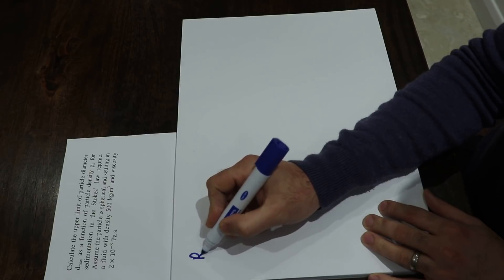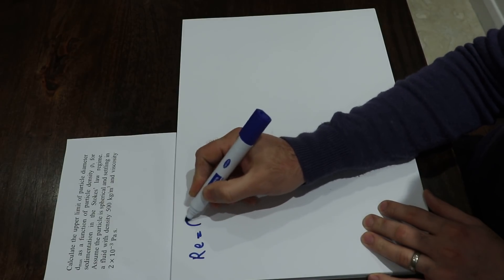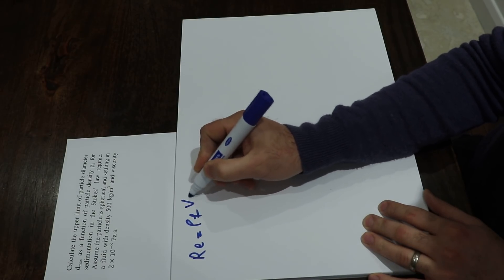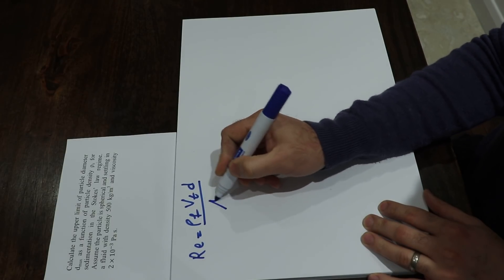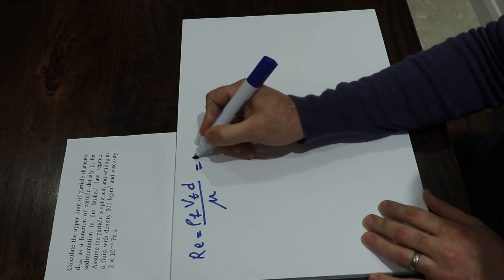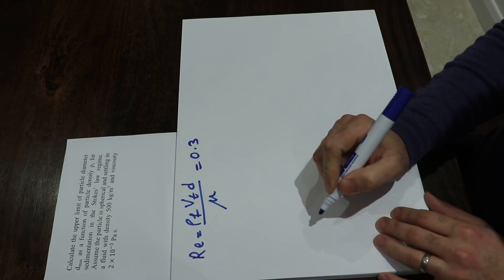So if we write the definition of Reynolds number as ρ_f times velocity times d divided by μ, the upper limit of the Reynolds number should be 0.3 in the Stokes regime.